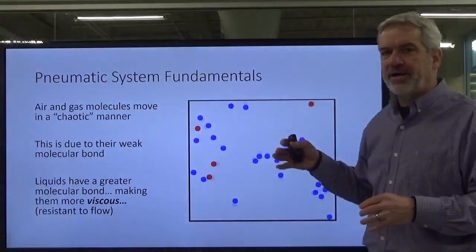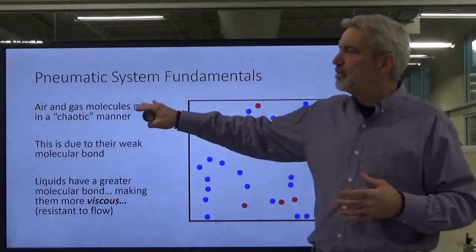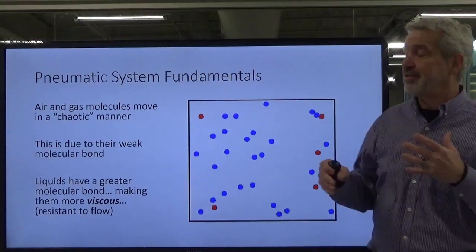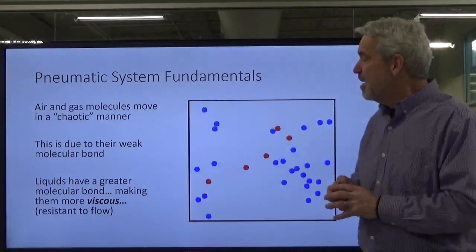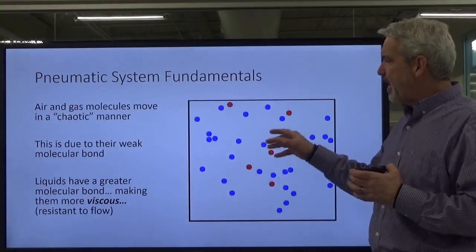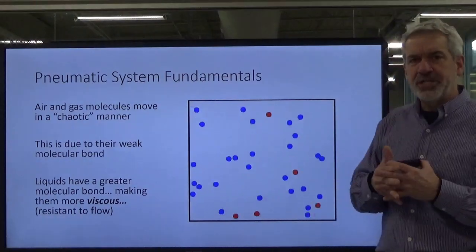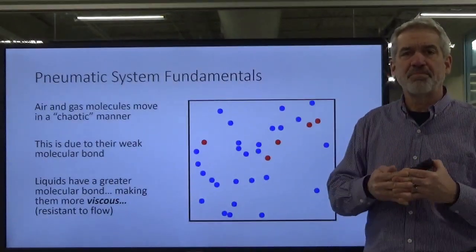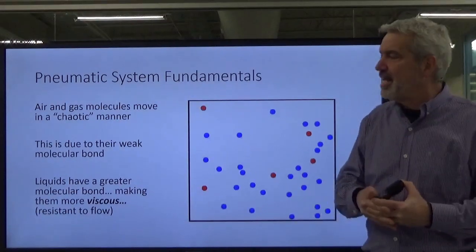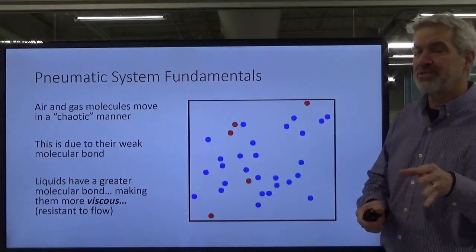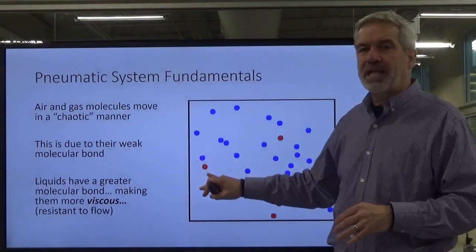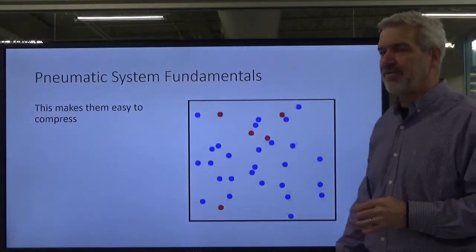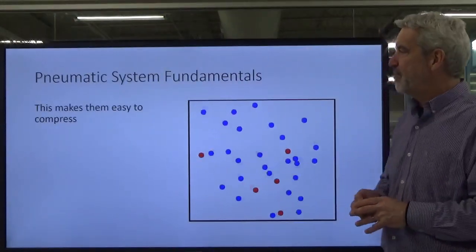Air and gas move in what's known as a chaotic manner. They're just sort of like squirrels at a rave. You've got these molecules and they are all over the place. They're not really bound to each other too much because they don't have a very strong molecular bond. Fluids such as hydraulic fluid, they have a stronger molecular bond. They sort of group together, traveling in a herd, you might say. It makes them more viscous, or less resistance to flow. But that's because of the molecular bond that is in the liquid, whereas the compressed air does not have as great of a molecular bond. And that is what makes it easier for them to compress.